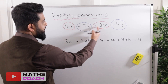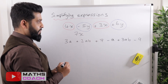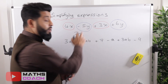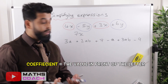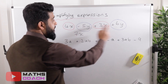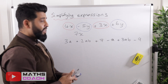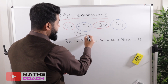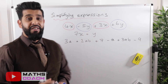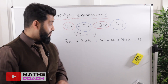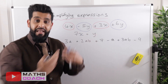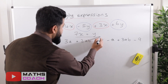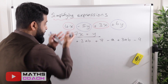Now I'll collect the x values: 4x plus 3x gives us 7x. Then for the y terms, you just focus on the coefficient — the number in front of the letter. Minus 5 plus 6 gives us positive 1, so minus 5y plus 6y gives us 1y. In algebra we don't write the number 1 in front of the letter; the letter alone tells us there is 1y there. That is the simplified answer for this expression.